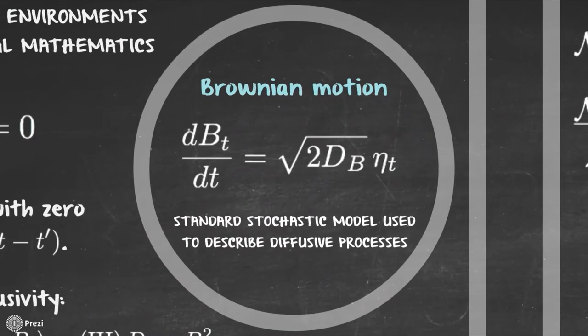In this case, eta stands again for standard white Gaussian noise with zero mean and delta correlation, while D represents the fixed diffusion constant.